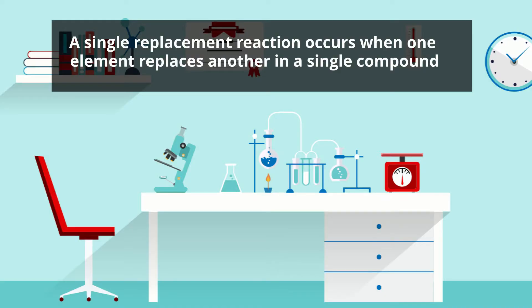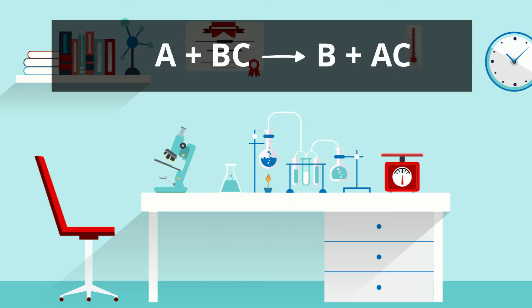A single replacement reaction occurs when one element replaces another in a single compound. This type of reaction can be generalized with this equation: A plus BC yields B plus AC. During the reaction, A replaces B, forming the product AC.